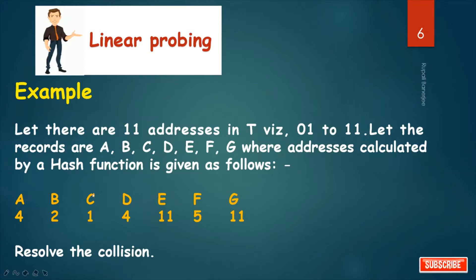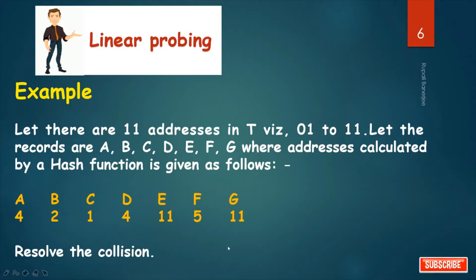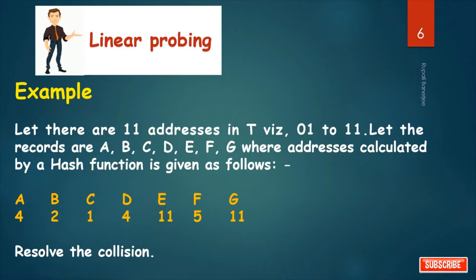We can see that for A and D, collision occurs — both are stored at the same location. Also for E and G, collision occurs — both are stored at the same location. We have to resolve these collisions by the linear probing technique. Linear probing is a closed hashing technique where we store the data in the same table.